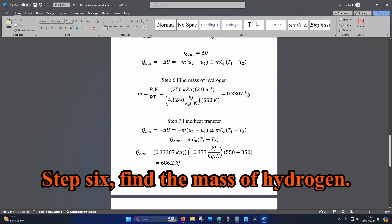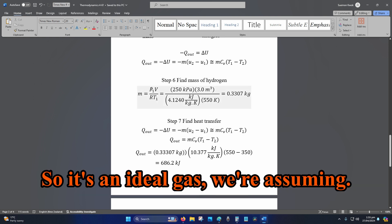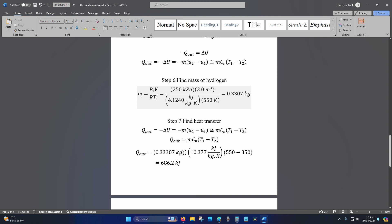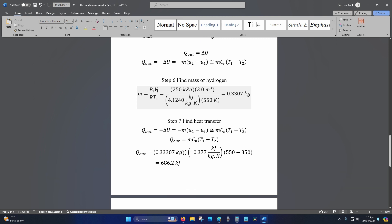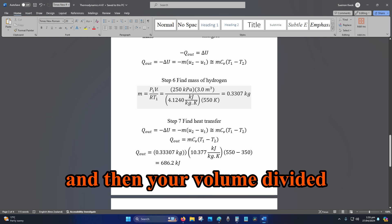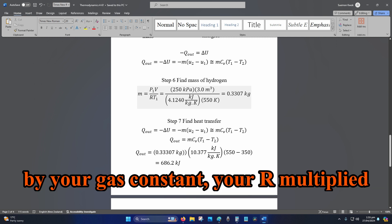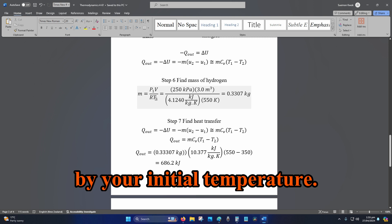Step 6, find the mass of hydrogen. It's an ideal gas, we're assuming. M is your mass, which is equal to P1, your initial pressure, and then your volume divided by your gas constant, your R, multiplied by your initial temperature.